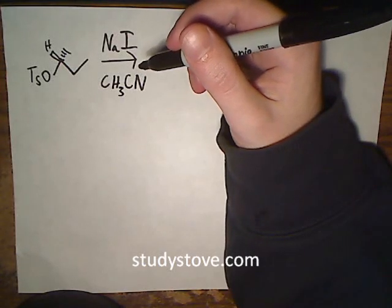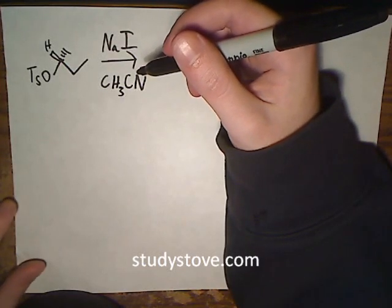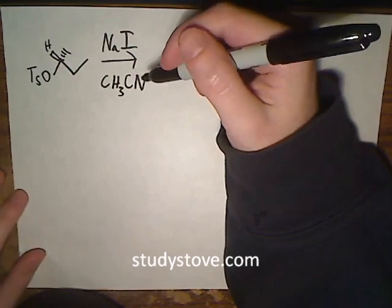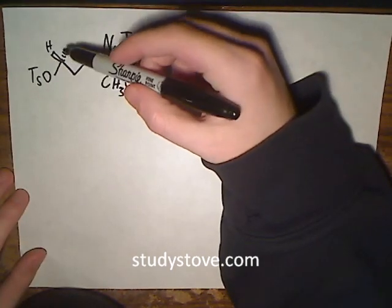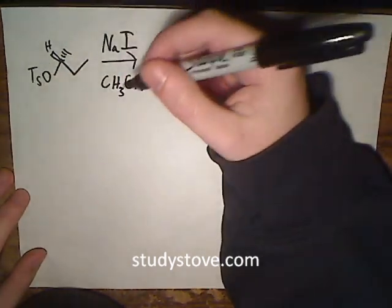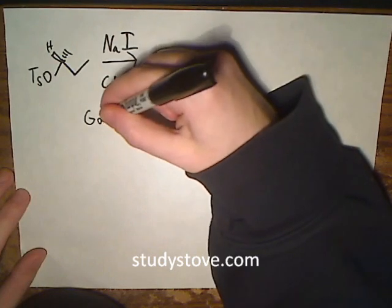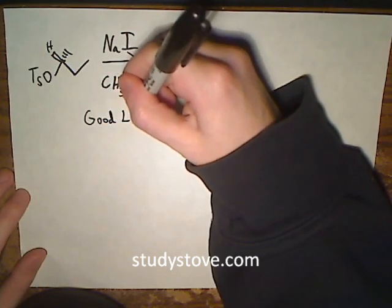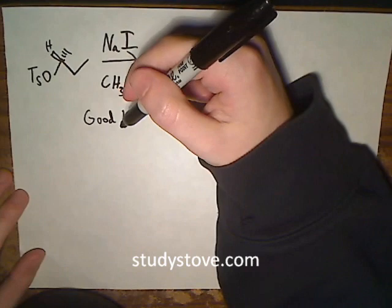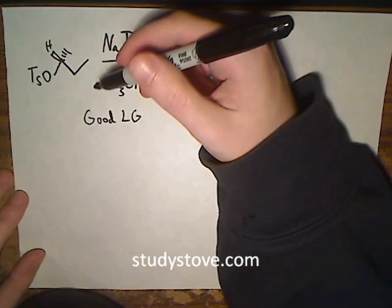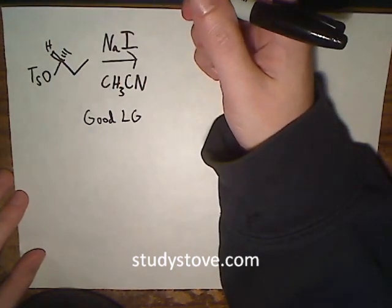In this question, I'm asked to provide the major organic products for this reaction. The first thing I notice about this molecule is we have a tosyl group. You should know that tosyl groups are very good leaving groups and are almost always presented in an OChem1 class. They're something you should definitely be familiar with.